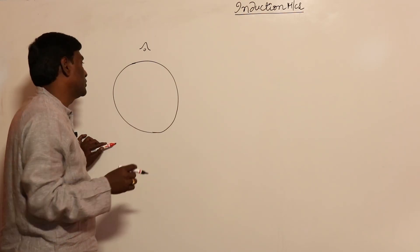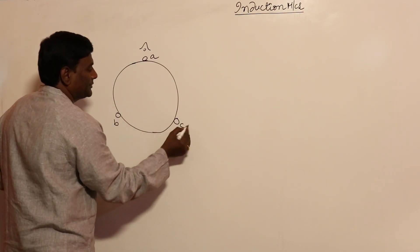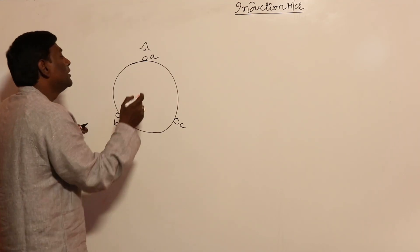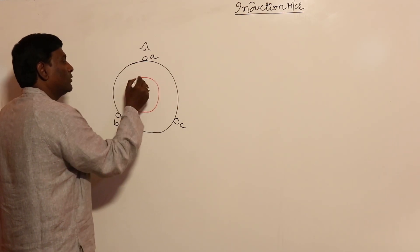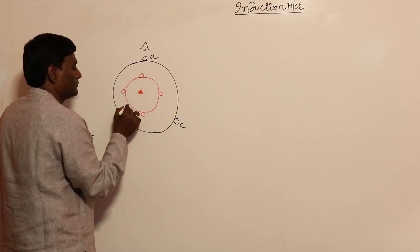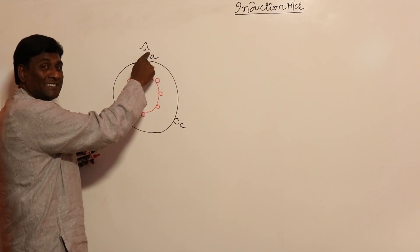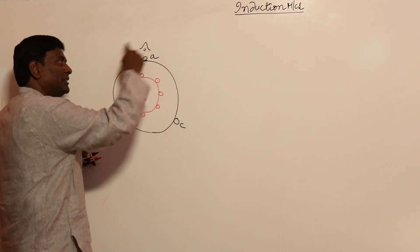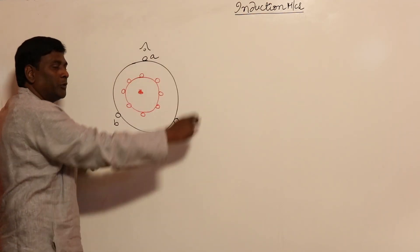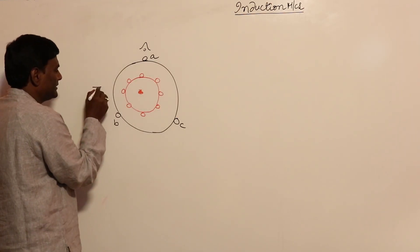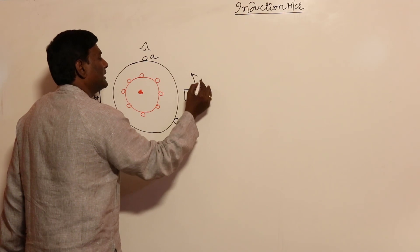For example, consider stator terminals A, B, and C connected to a three-phase source. Now think of the rotor — many conductors are present in the rotor. If we supply ABC phase sequence, the rotating magnetic field (RMF) will rotate in one direction. If we supply ACB phase sequence, it will rotate in the opposite direction. With ABC sequence, the N pole and S pole of the stator rotate in this direction with synchronous speed omega_s.